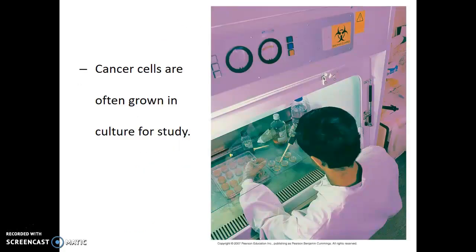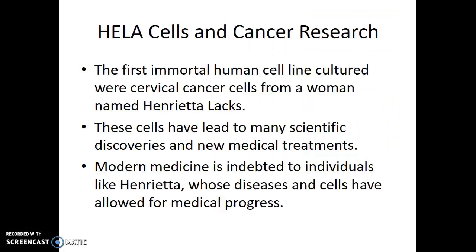Research on cancer cells is an active area of study. In fact, there is an immortal human cell line known as HeLa cells, obtained from a sample of a cervical tumor from a woman named Henrietta Lacks. Unfortunately, Henrietta died in 1954, however her tumor cells are still alive today and are continuing to grow. This cell culture has allowed scientists to make a variety of scientific discoveries and new medical treatments. Modern medicine is indebted to individuals like Henrietta, whose diseases and cells have allowed for the medical progress we see today.